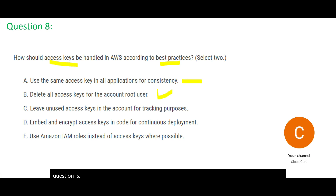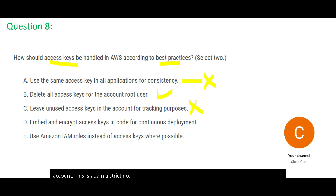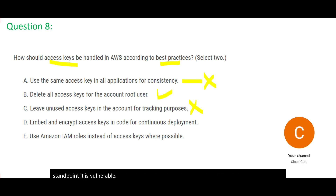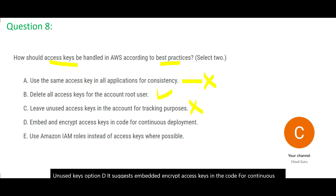Option C talks about leaving unused access keys in the account — this is a strict no-no. From a security standpoint, if you leave unused access keys for a long time, they are vulnerable. Hackers can access your system using those unused keys. Option D suggests embedding and encrypting access keys in the code for continuous deployment. You never put access keys, credentials, or username and password inside your code — that is against best practice.